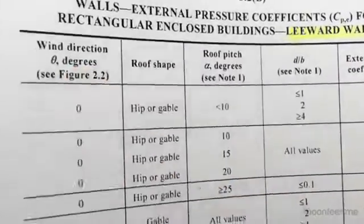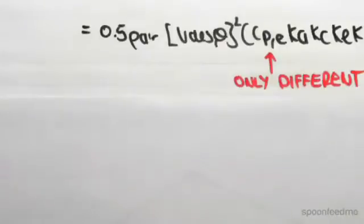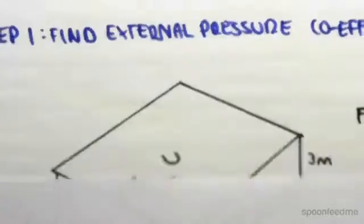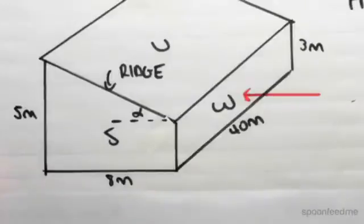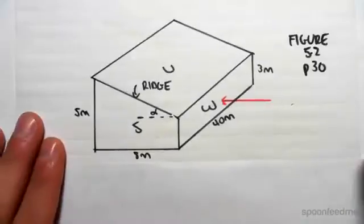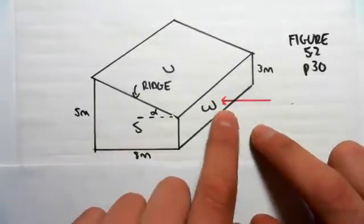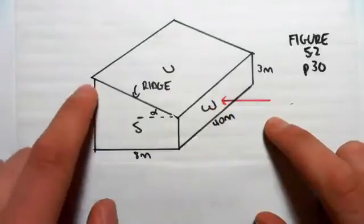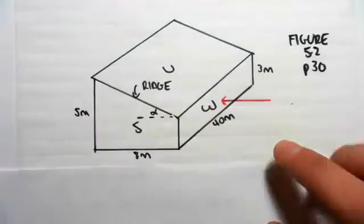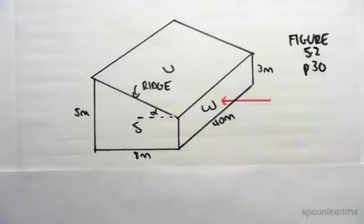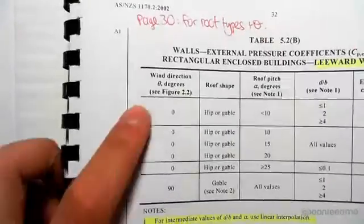What we first do is it's nice to draw a little picture of what's going on. So here's our structure. We're now looking at the leeward side, so here's the windward side. The wind's coming to hit here. We're looking at this side over there. Now in order to determine the theta, that was the first thing in this column.